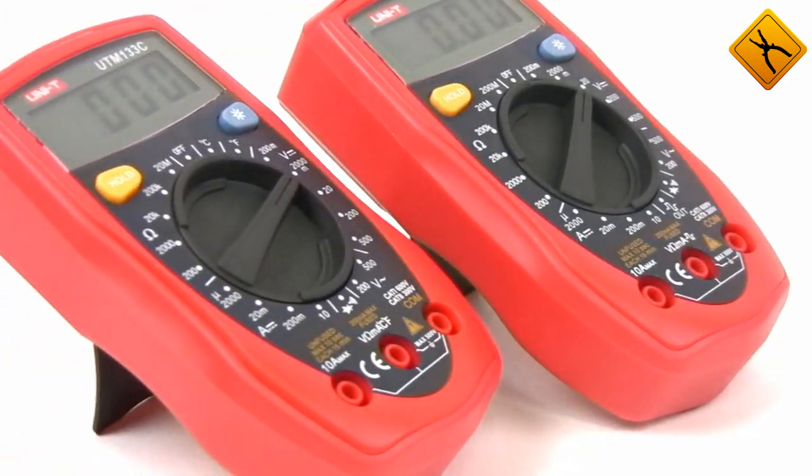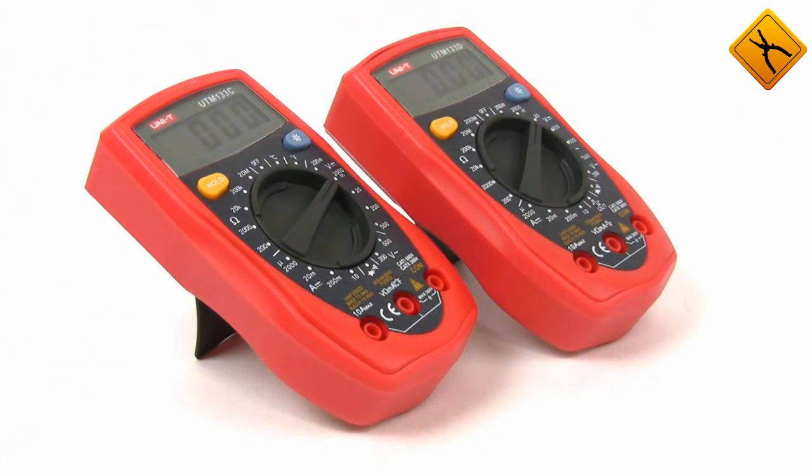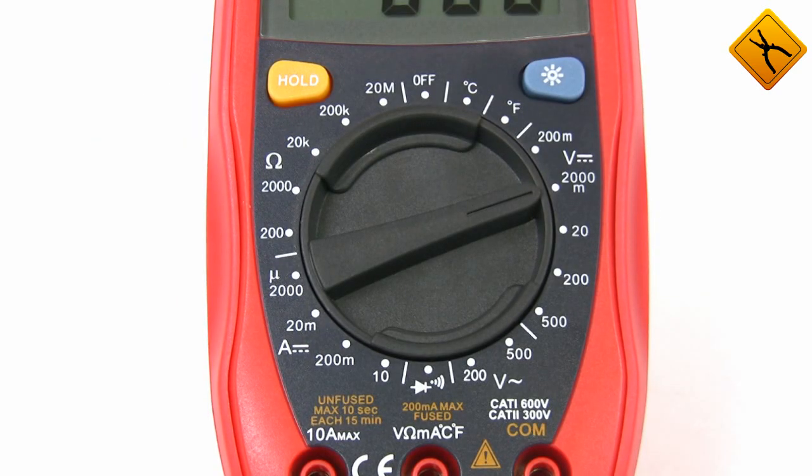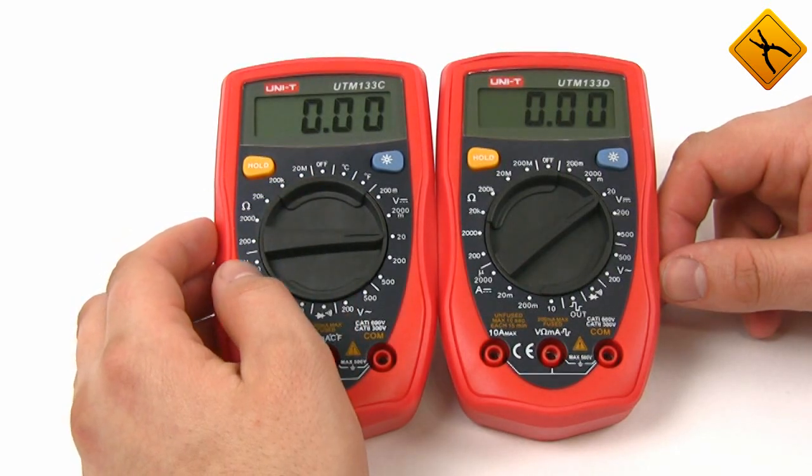At first glance, both devices look similar. The basic functionality is also the same. Each of them measures direct and alternating voltage up to 500 volt and direct current up to 10 ampere, as well as resistance and continuity buzzer.